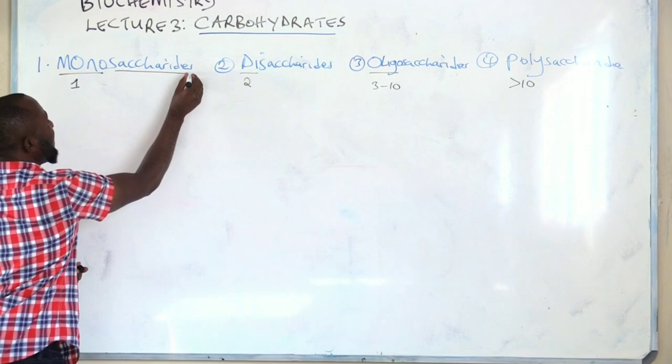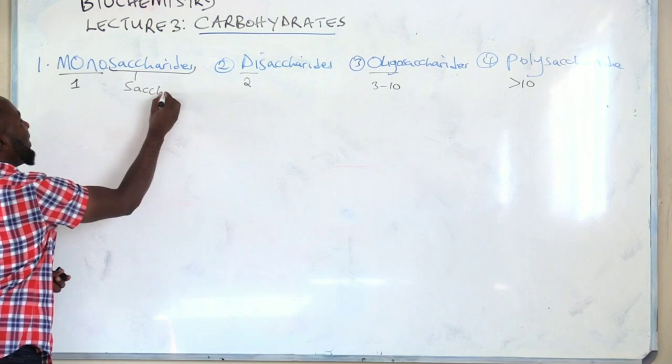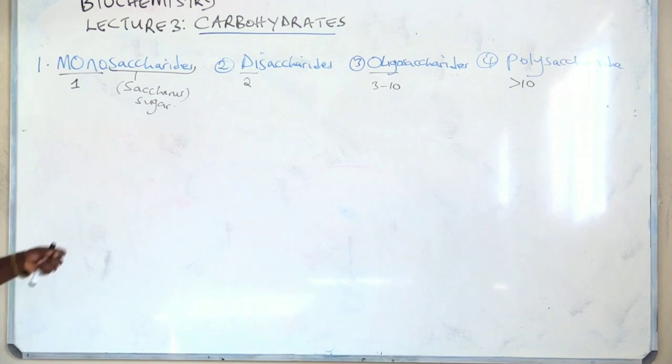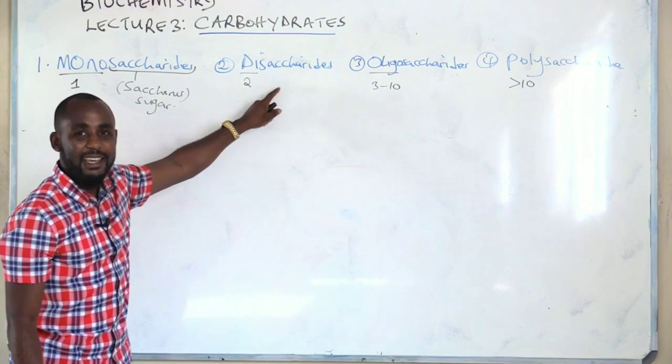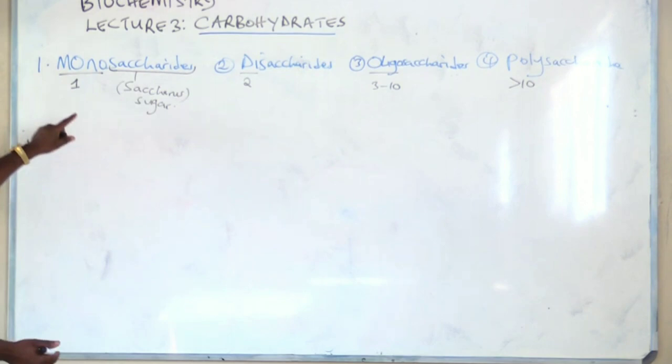The word 'saccharides' comes from a Greek word and simply means sugar. So when we say monosaccharides, we mean one sugar; disaccharides — two sugars; oligosaccharides — three to ten sugars; polysaccharides — more than ten sugars.